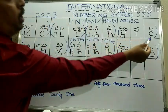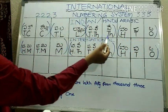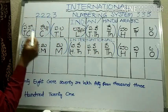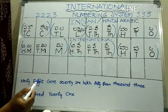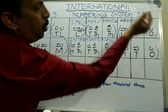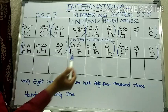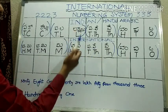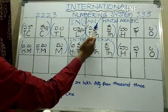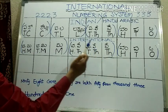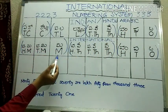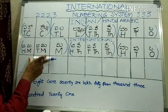Let me demonstrate the grouping visually. In the international system, ones, tens, hundreds — these three make one group. Then thousands, ten thousands, hundred thousands — another group of three. Then millions, ten millions, hundred millions — these three are also in one group. So the international system consistently uses groups of three from right to left.